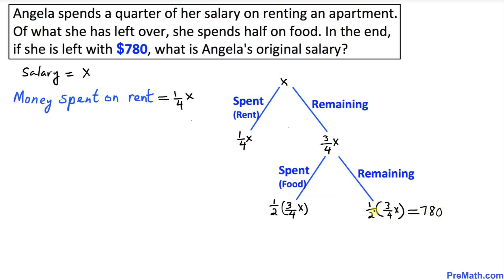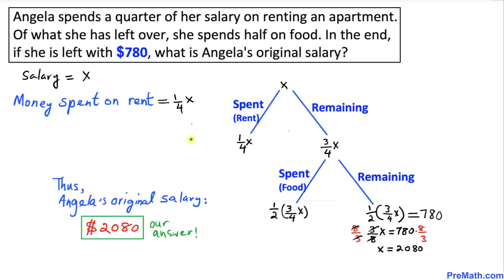Now let's solve for X. One-half times three-fourths gives us three-eighths, so three-eighths times X equals 780. To isolate X, we multiply both sides by the reciprocal of three-eighths, which is eight over three. The three-eighths and eight-over-three cancel out, so X equals 780 times eight over three, which gives us two thousand and eighty dollars.